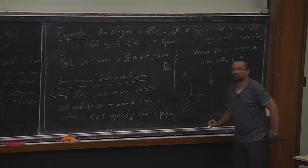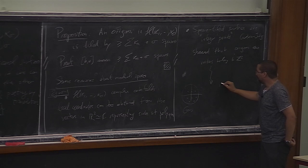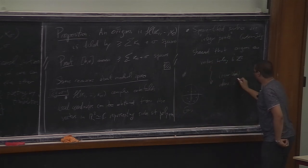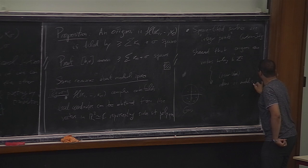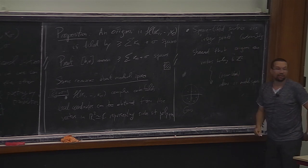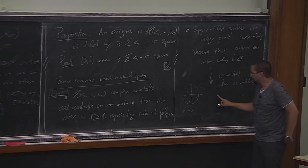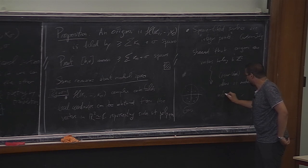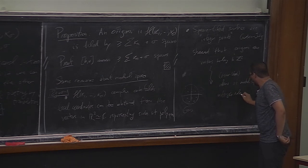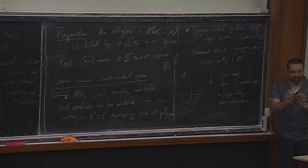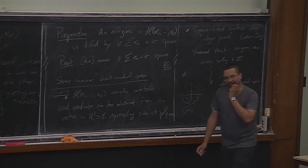Let's talk about primitivity from the combinatorial point of view. Given an origami as a pair of permutations (h, v), you can associate the permutation group Σ(O) — the subgroup generated by h and v. Some people call it the monodromy group, but I'm going to reserve that word for other business. I'll give it the artificial name 'associated permutation group.'